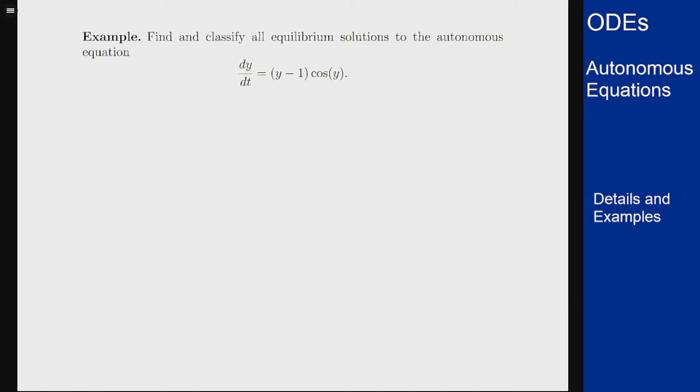In this example we want to find and classify all equilibrium solutions to the autonomous equation dy/dt = (y - 1) times cos(y). So the graph here is obviously tricky to sketch because it's going to be a cosine function that oscillates up and down, multiplied by y minus 1.